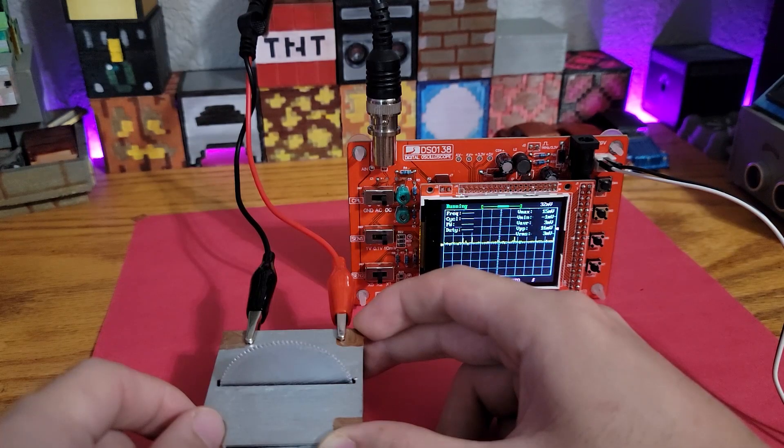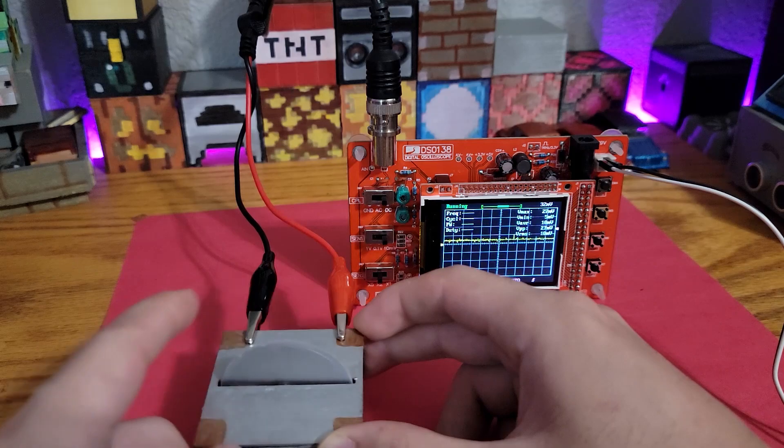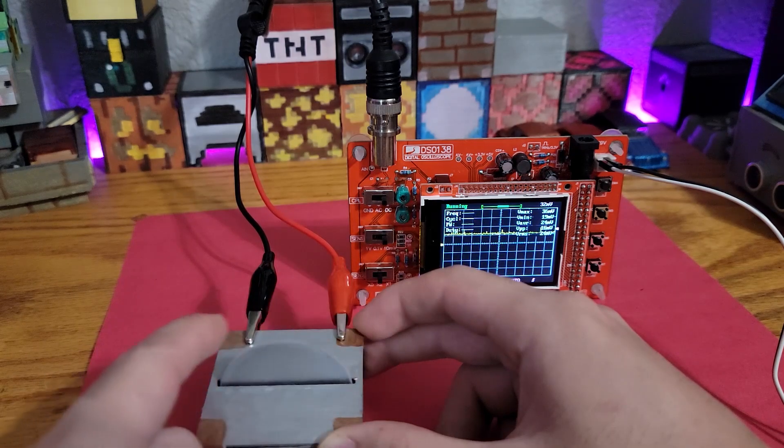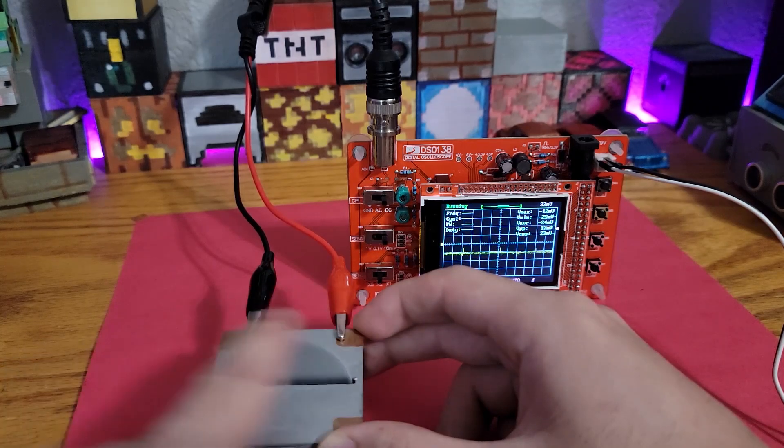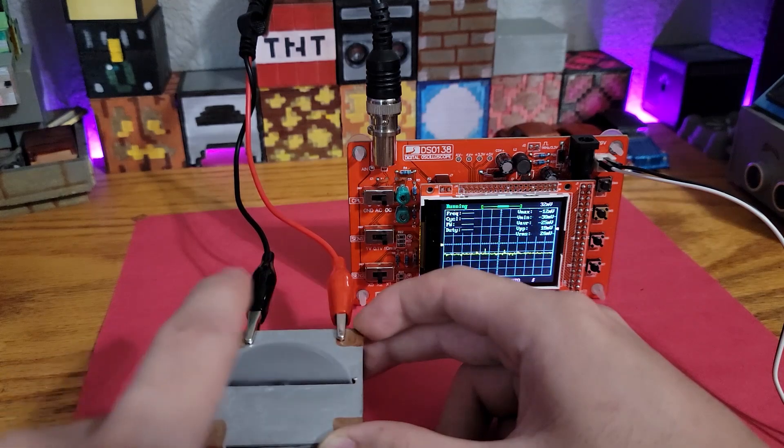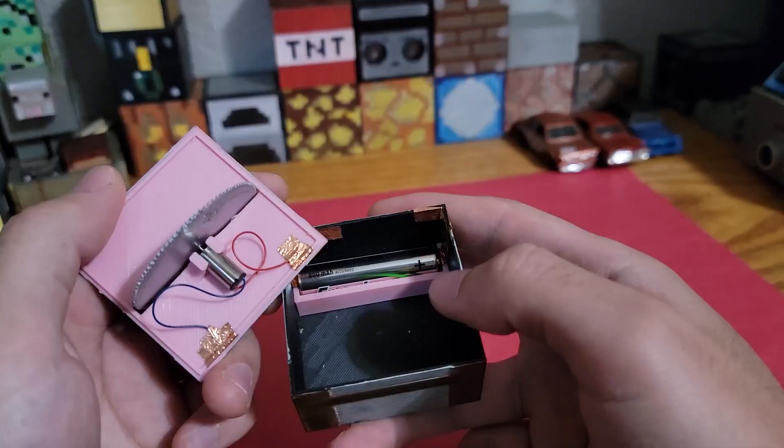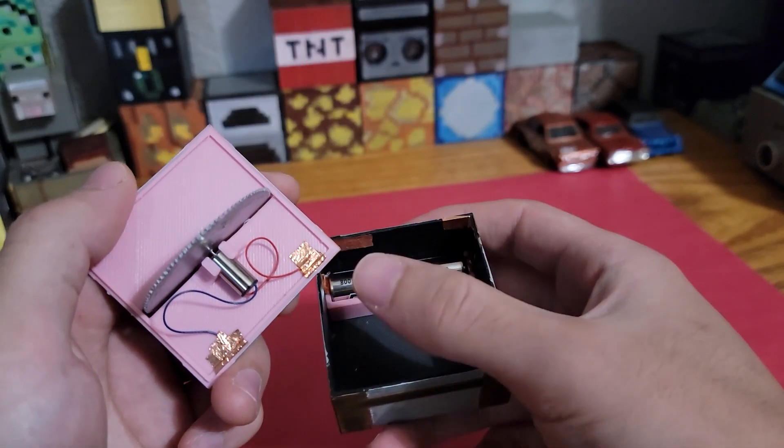Now having it hooked up to the oscilloscope, if I turn it clockwise you can see it induces a positive voltage. Now going to the left or counterclockwise creates a negative voltage. Hooking up to the battery with the positive going to the red wire, it'll spin clockwise.